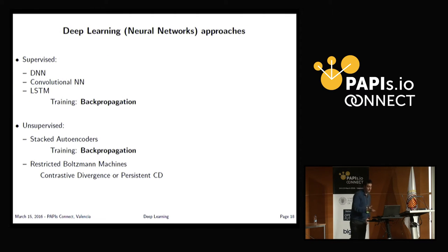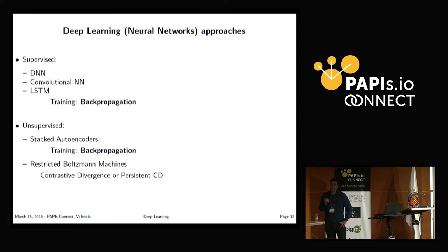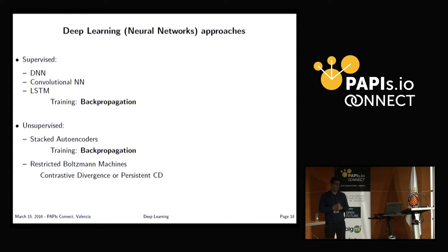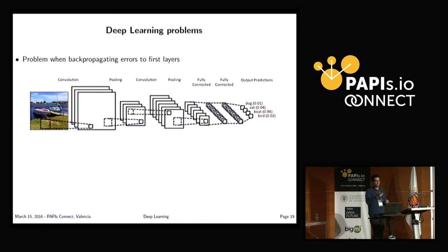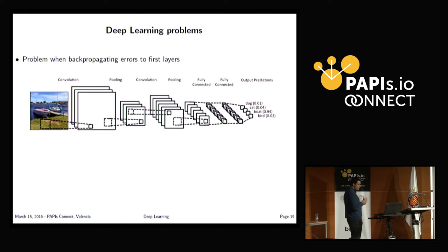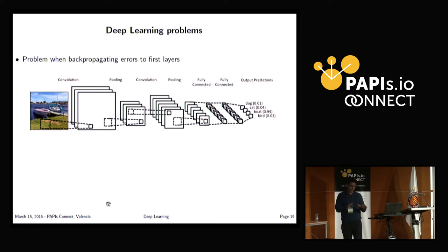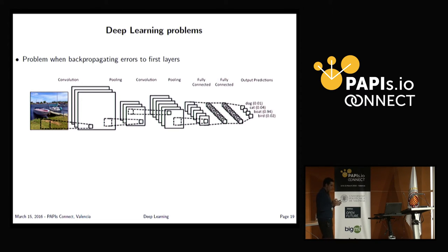Deep neural networks, convolutional neural networks, and long short-term memory recurrent neural networks are all trained using backpropagation — something from the 1980s. Autoencoders and noisy autoencoders are also trained by backpropagation. Only the newer unsupervised models based on restricted Boltzmann machines use a different algorithm: the contrastive divergence algorithm. The problem in the 1980s was the vanishing gradient: when backpropagating from the output to the input layers, the gradient vanished to zero, resulting in no learning in the very initial layers, which remained at their random initialization.